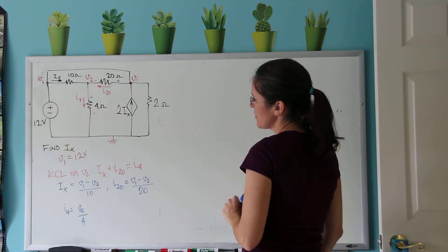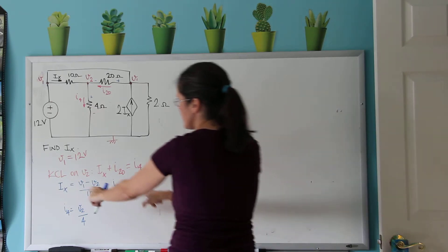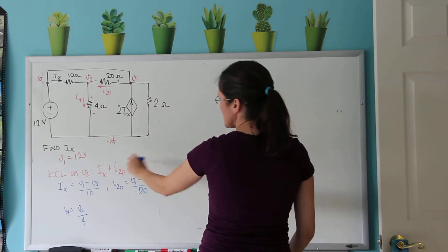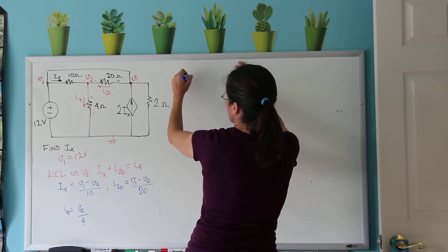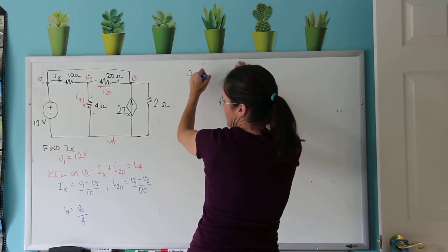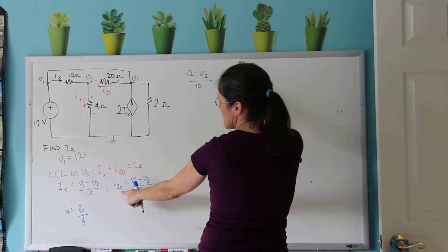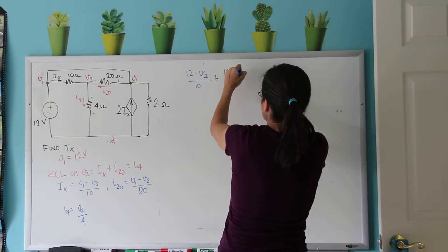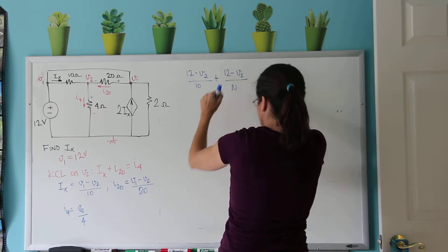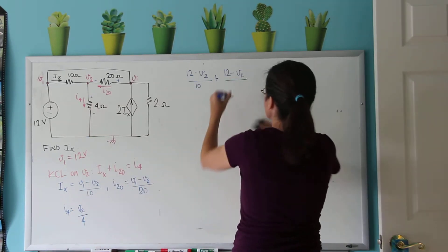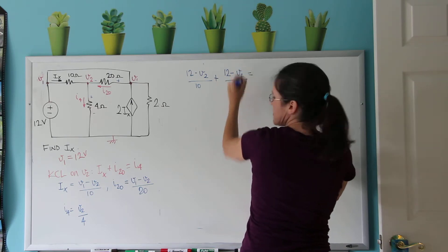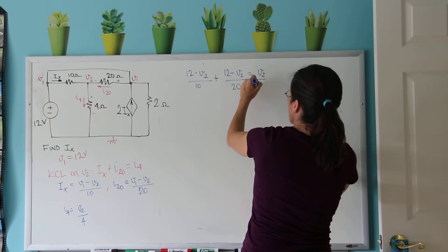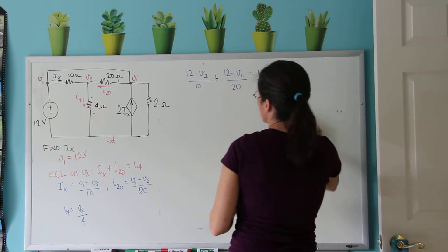So now I know that V1 is 12. So I'm going to use that information here and use this one equation. So Ix is 12 minus V2 divided by 10. And then I20 is 12 minus V2 again, but divided by 20. Equals I4, which is V2 over 4. And I'm multiplying everybody by 20.